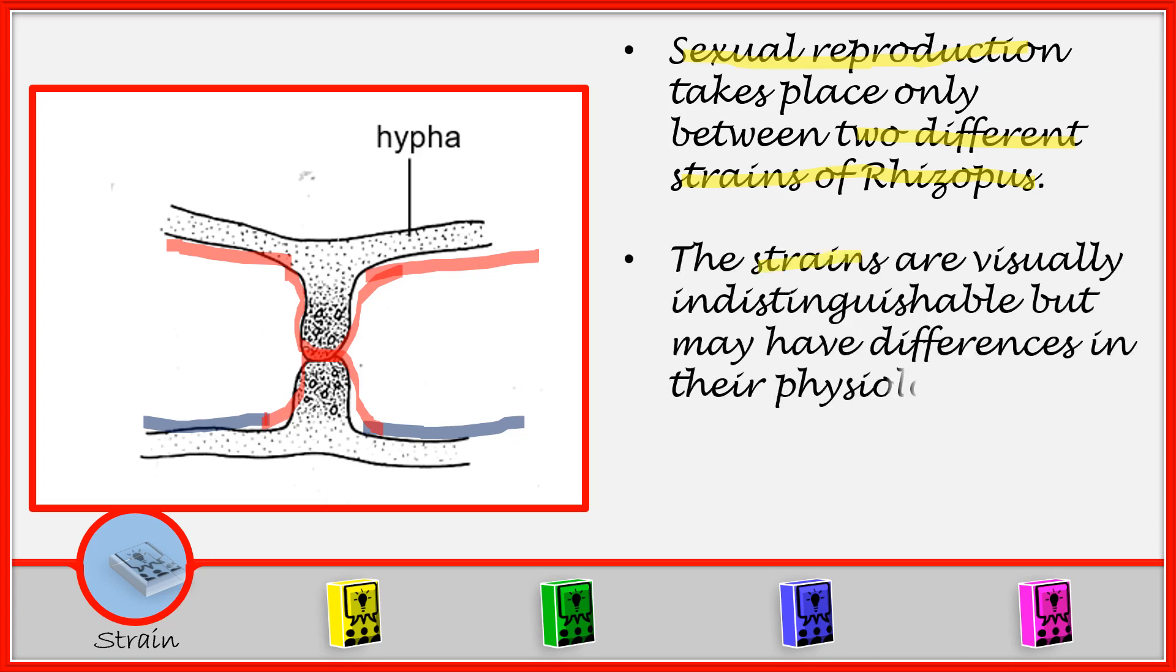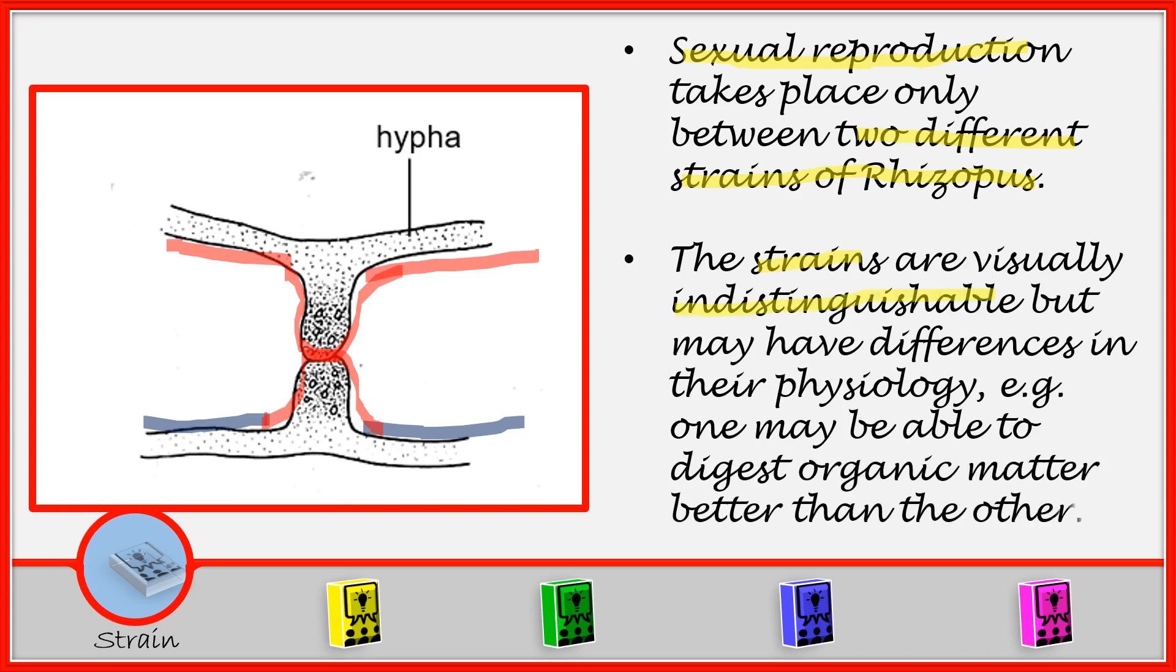The strains are visually indistinguishable but may have different physiology. For example, one may be able to digest organic matter better than the other. So when you look at them, you may not see a difference between the two strains, but they may be different in such a way that one of them can easily digest organic matter better than the other strain.